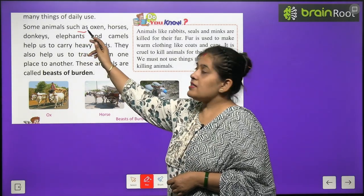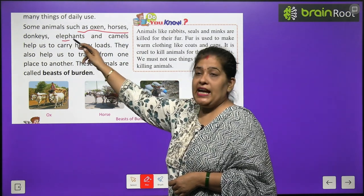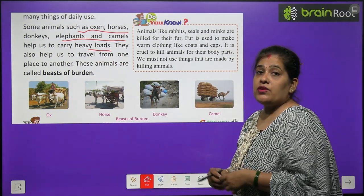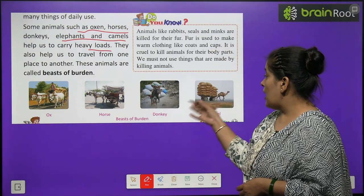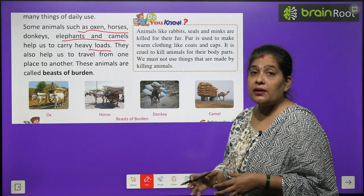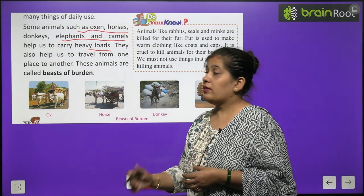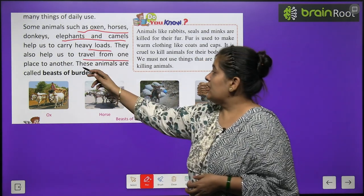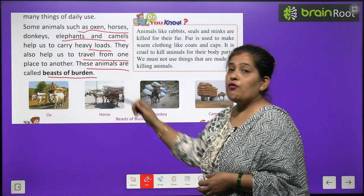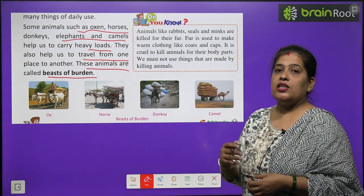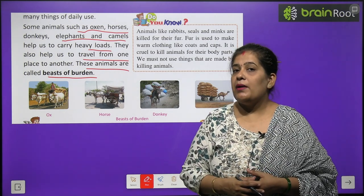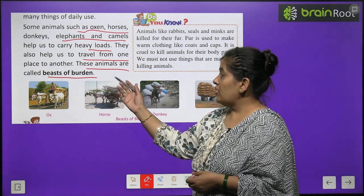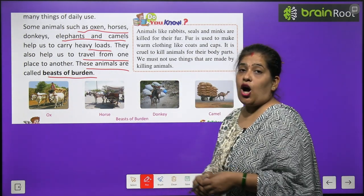Some animals such as oxen, horses, donkeys, elephants and camels help us to carry heavy loads. Kuch janvar jaise bail, ghoda, gadha aur oonth kya uthate hai? Bhaar, heavy load — zyada bhaari saman uthate hai. They also help us to travel from one place to another. These animals are called beasts of burden. Ye janvar ek jagah se dusri jagah jane mein bhi hamari madad karte hai. In janvaro ko hum kya kehte hai? Beast of burden.